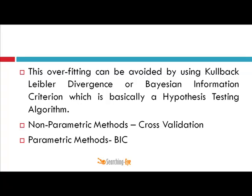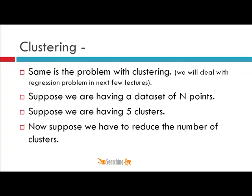Overfitting can be avoided by Kullback-Leibler divergence or Bayesian Information Criterion, which is essentially a hypothesis testing algorithm. Non-parametric methods include cross-validation, while BIC is a parametric method because it assumes the data comes from a Gaussian distribution. The same problem applies to clustering.